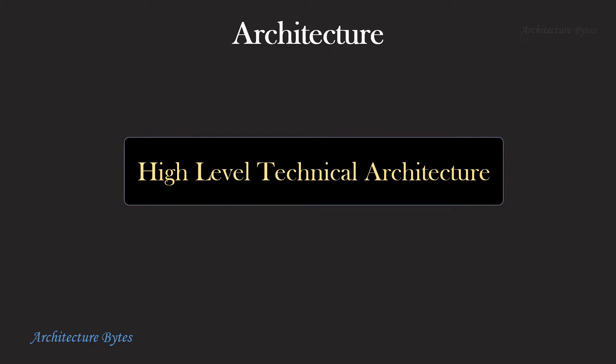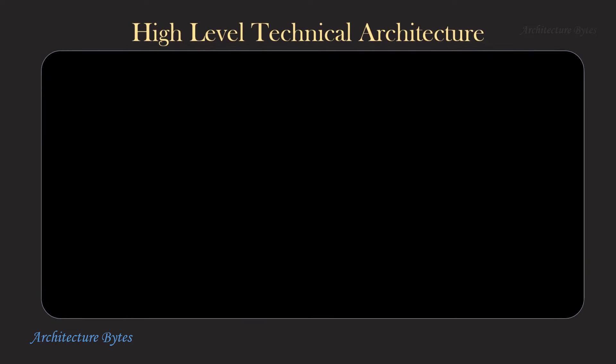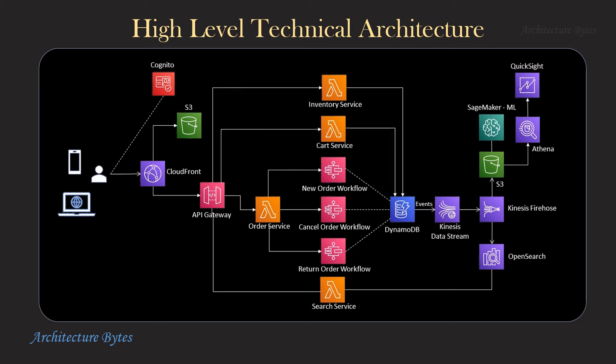Once we have the logical architecture, we should be able to create a high-level technical architecture. In our technical architecture, we clearly identify what tools and technologies are in use. In our case, we will be using Lambda functions, AWS Step Functions, DynamoDB, S3, Kinesis, and so on. It clearly shows how these components interact with one another.